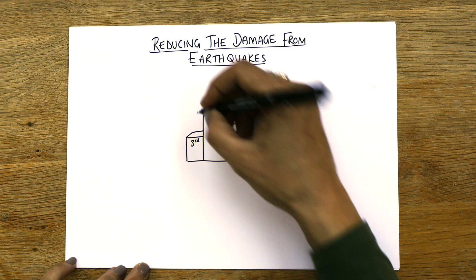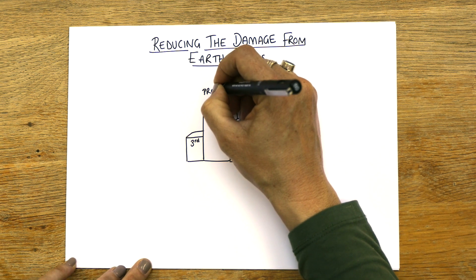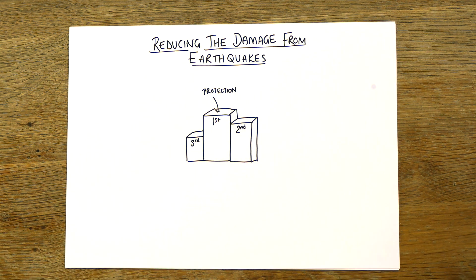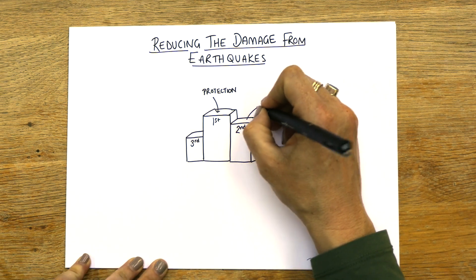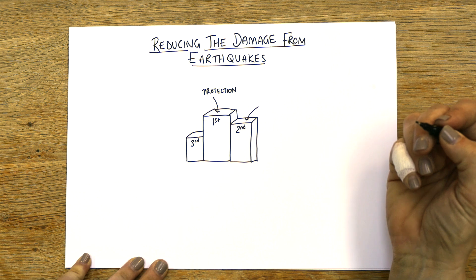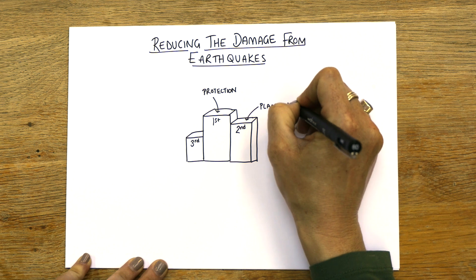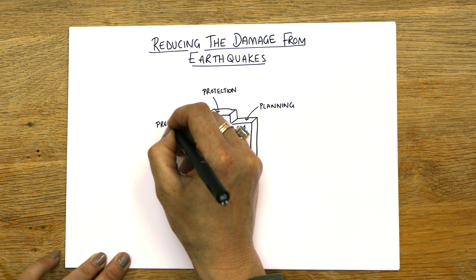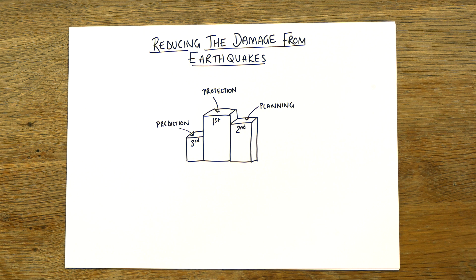We're gonna do it in that order. If you write protection as number one — you won't lose marks if you put a different one first, as long as you justify it — but for this video we're gonna do protection as number one, because prediction is almost impossible with earthquakes. Planning can be second, and then third is prediction, because earthquakes are super hard to predict.